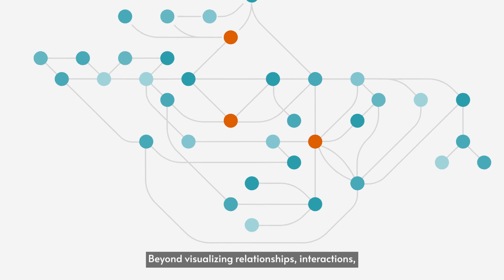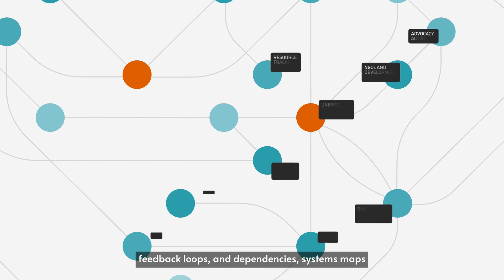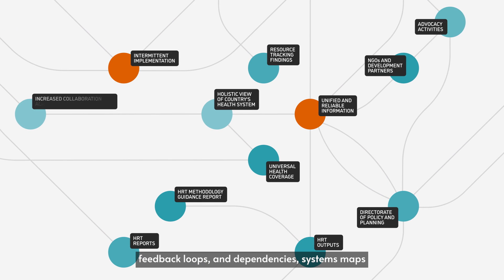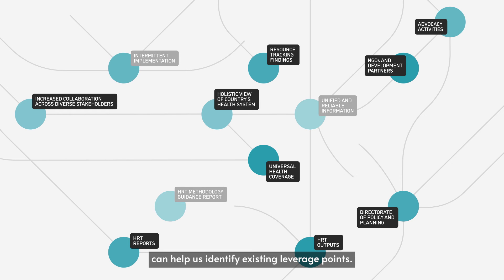Beyond visualizing relationships, interactions, feedback loops, and dependencies, systems maps can help us identify existing leverage points.